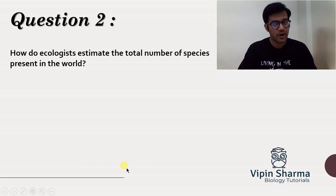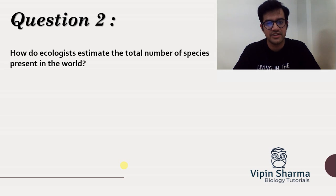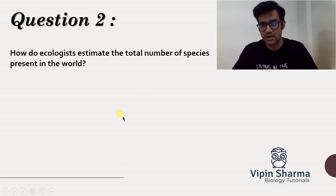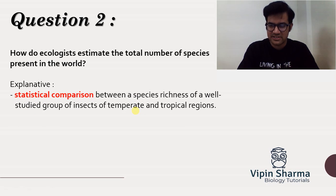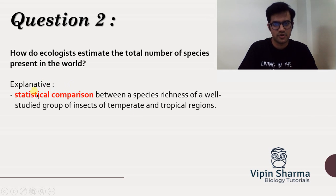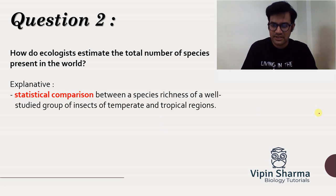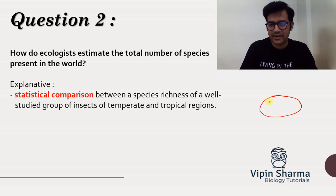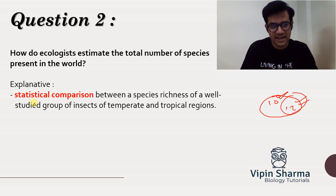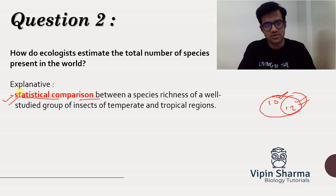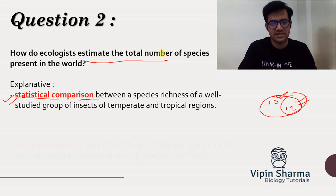The second question is: how do ecologists estimate the total number of species present in the world? This is related to species richness. The first method is statistical comparison — one region may have 10 types of species, another has 12. You can statistically compare these regions. This is how they estimate the total number of species present on Earth.